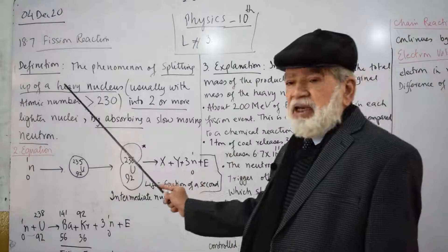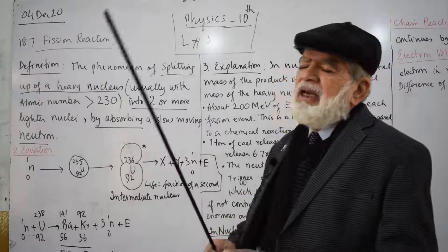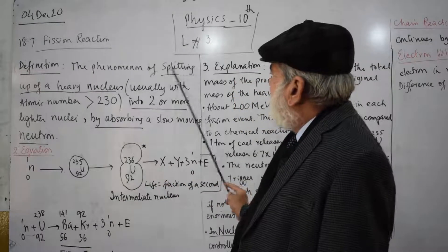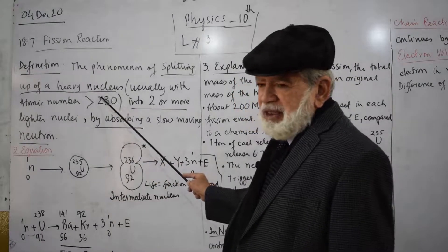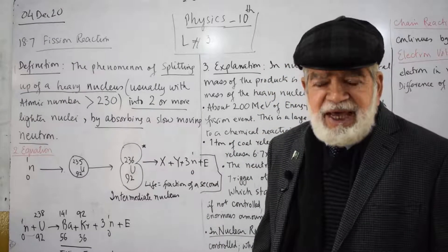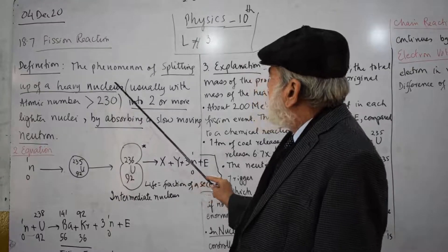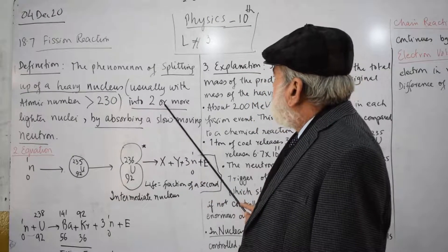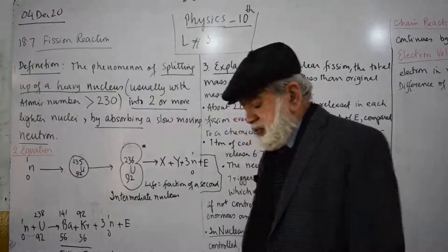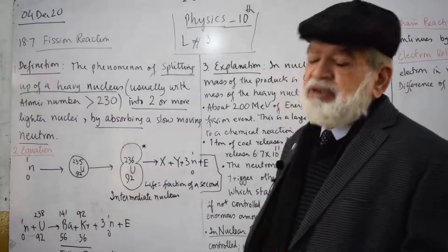Now coming to the definition: fission. Please remember, the phenomena of splitting up of a heavy nucleus. This phenomena of fission always happens in heavy nuclei. The phenomena of splitting up of a heavy nucleus into two or more lighter nuclei by absorbing a slow moving neutron.